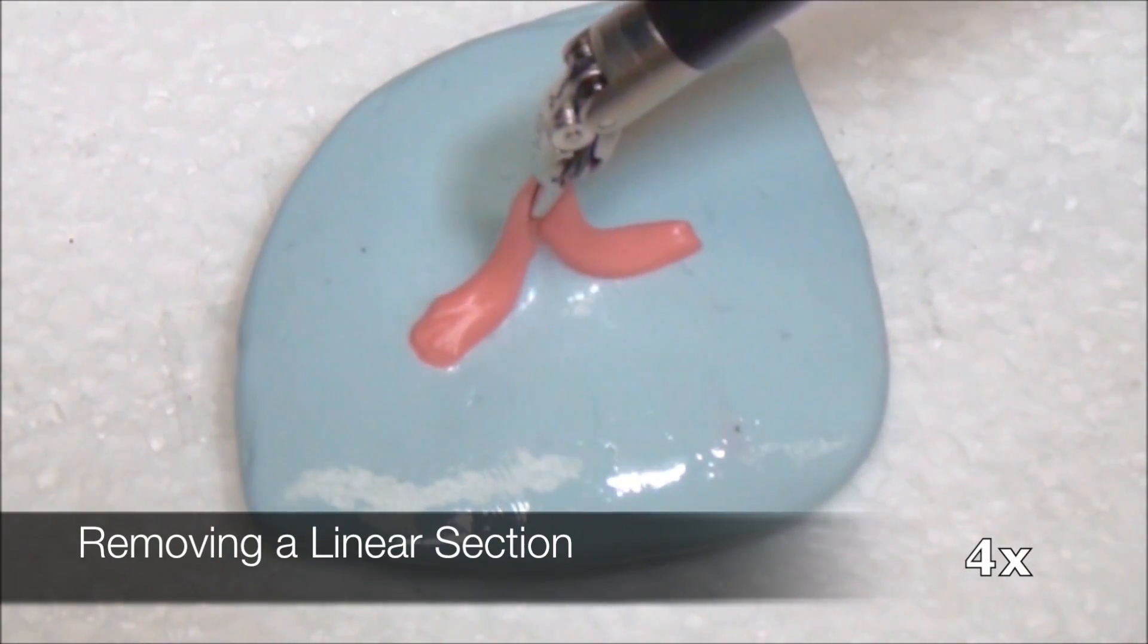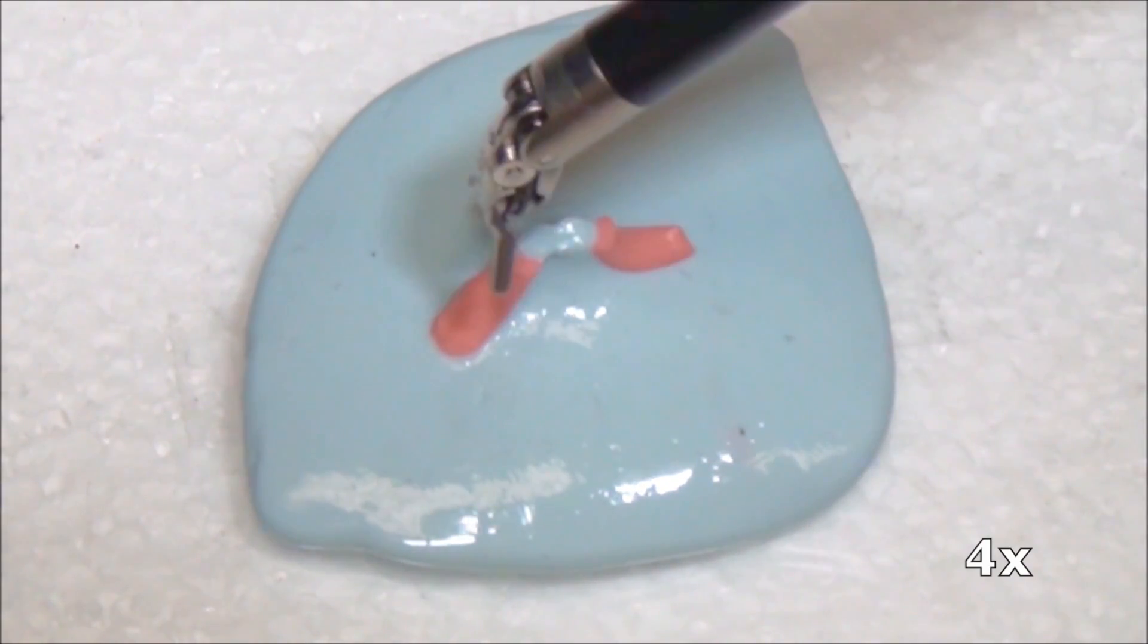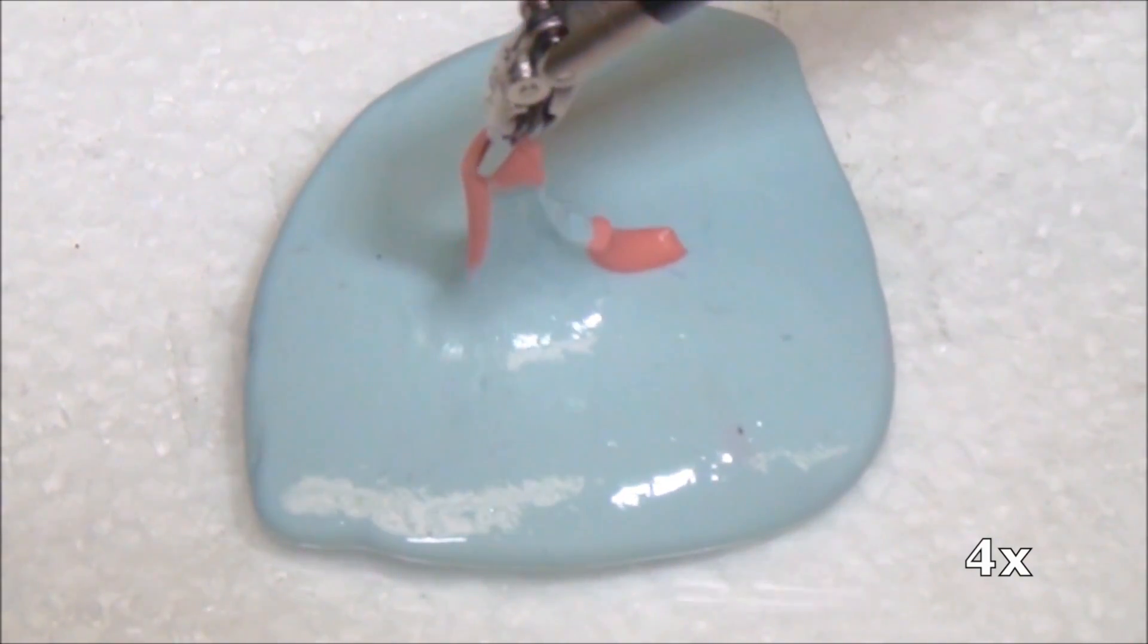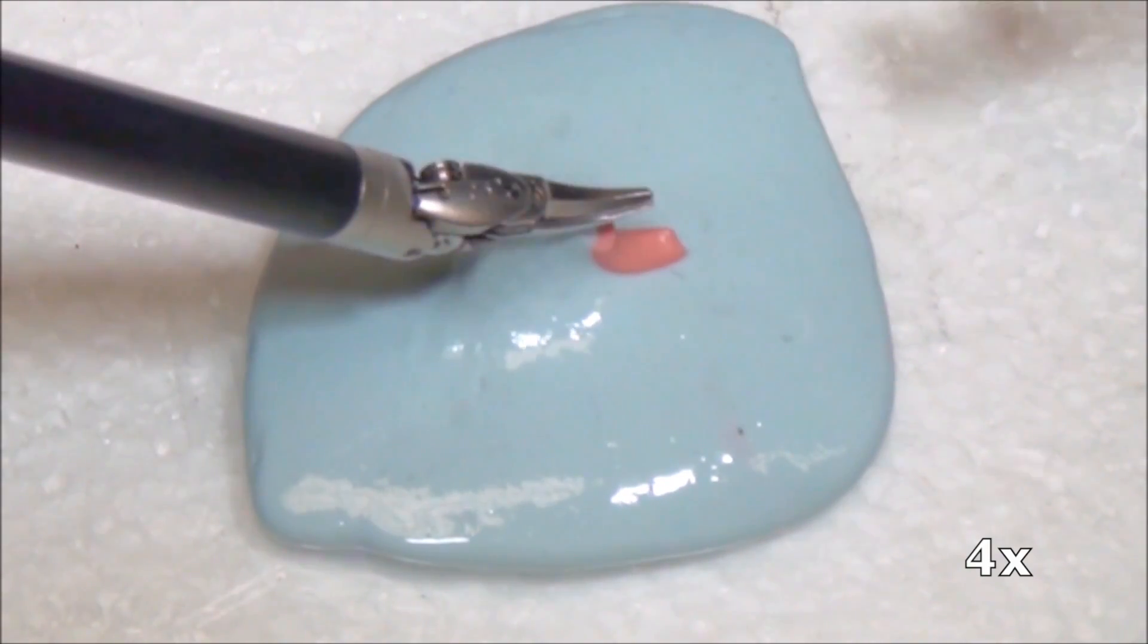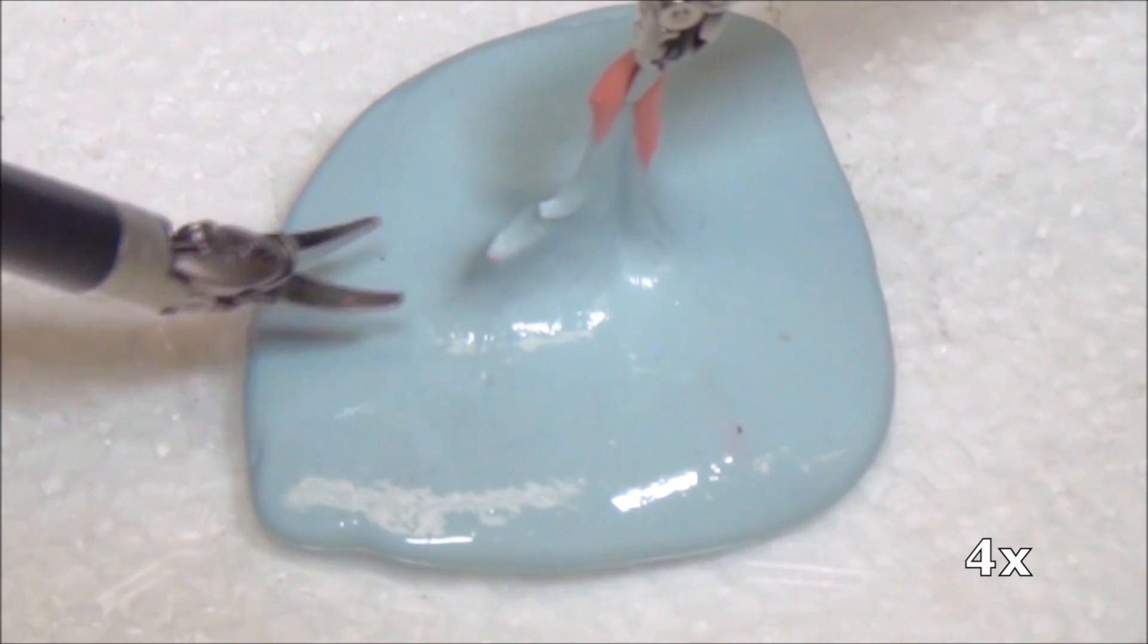The first subtask is linear debridement, removing a linear section of cancerous tissue. We use plastic putty as tissue phantom. A computer vision system identifies the linear section and guides the robot to extract it in subsections. In five trials, the robot successfully extracted all target tissue in pink.